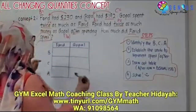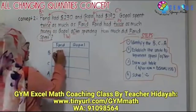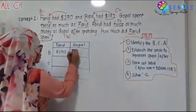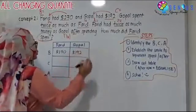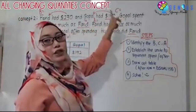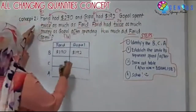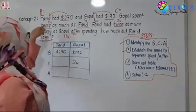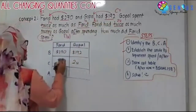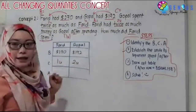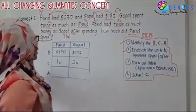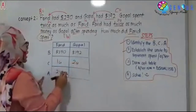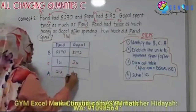Before Farid, he has $270 — we put that in. Before Gopal, he had $192 — we put 192. Then, change Gopal: Gopal spent two units. Change Farid: Farid spent one unit. After Farid, he had two units. After Gopal, he had one unit.